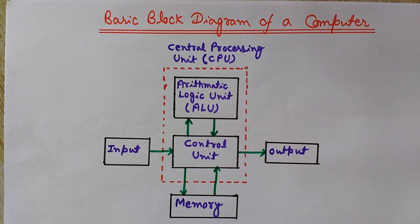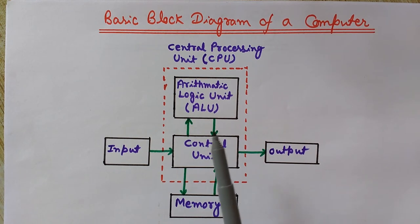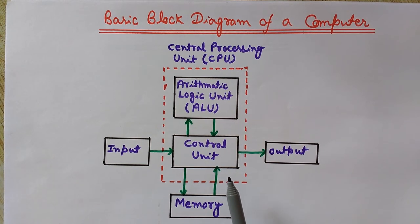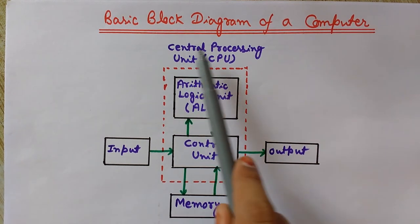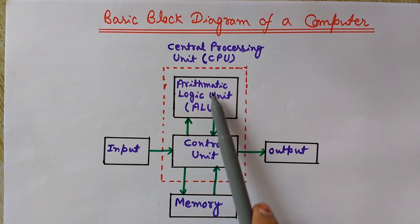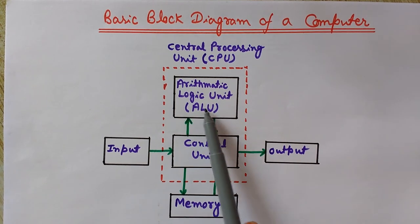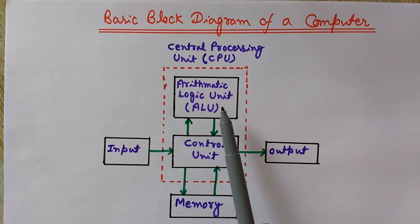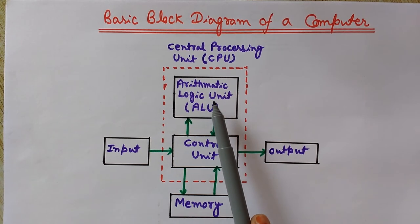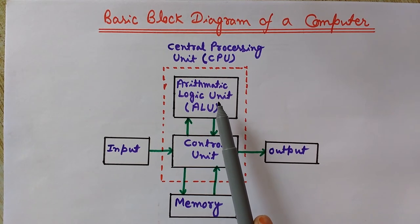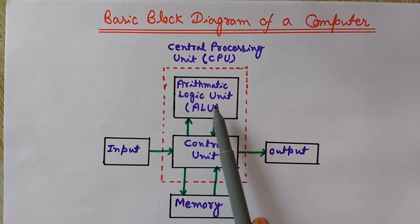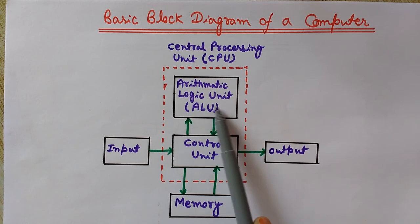The Central Processing Unit is the main unit — it is the brain of the computer. All processing and calculations are performed in the CPU. It has two components: the Arithmetic Logic Unit (ALU) and the Control Unit. The ALU performs all arithmetic operations such as multiplication, division, addition, subtraction, and extraction, as well as logical operations like AND, OR, NAND, NOR, etc.